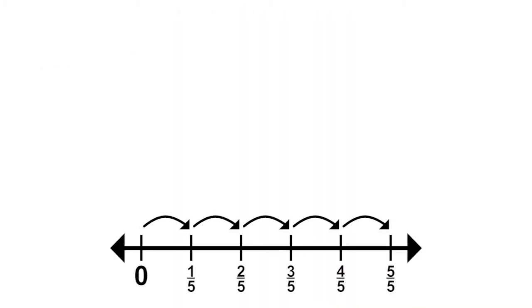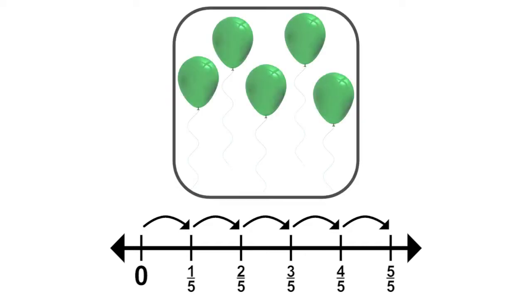We can also represent our addition equations on a number line. Five-fifths can be shown as five jumps of the unit fraction one-fifth. Similarly, with a set model — here, five-fifths is shown as a set of five balloons, each balloon representing one-fifth of the total set.